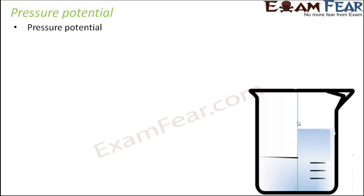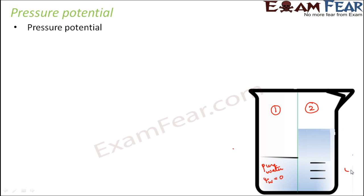Let us take the same example from the previous slide. This was region 1 with pure water where the water potential was considered to be 0. Region 2 initially had pure water but we added some solute, so the solute potential became negative. That is why water flowed from region 1 to region 2, and you can see the level of water is more in region 2 because most of the water has started flowing in due to osmosis.